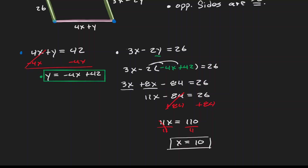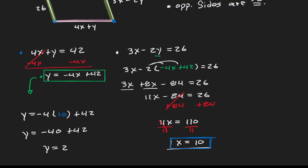So we know what value of x will make this a parallelogram. Now we need the value of y. We already have an equation for y, so let's plug in x equals 10. We get y equals negative 4 times 10 plus 42, which becomes negative 40 plus 42, giving us a value for y of 2.